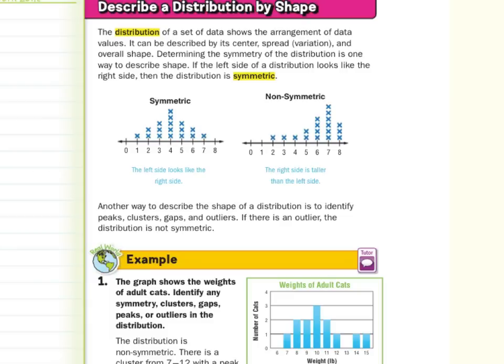Another way to describe the shape of a distribution is to identify peaks, clusters, gaps, and outliers. If there is an outlier, the distribution is not symmetric.